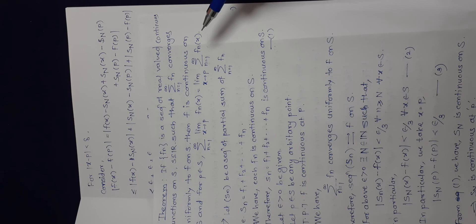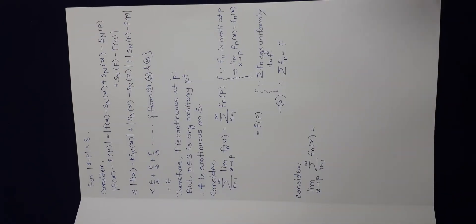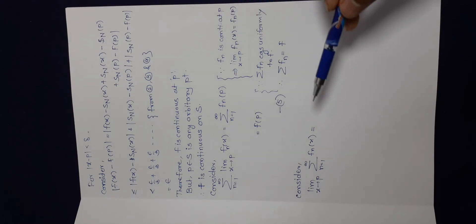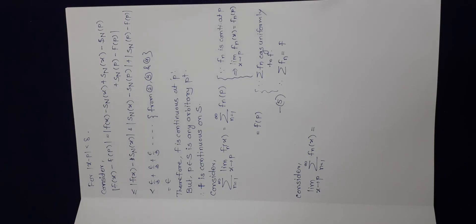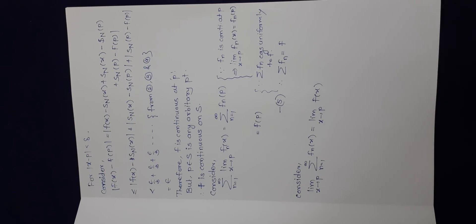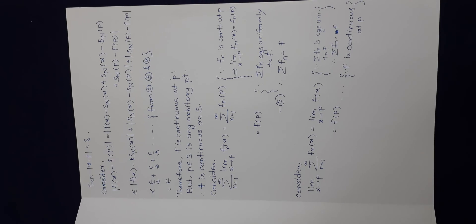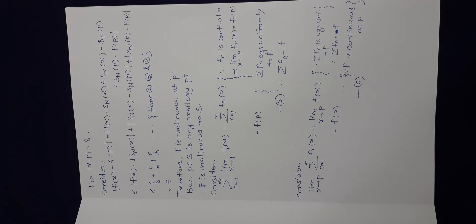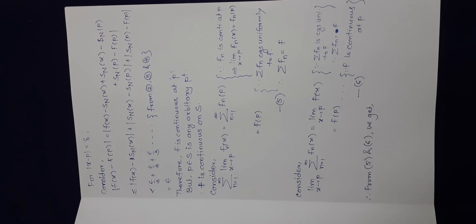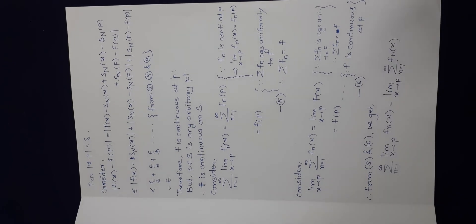Now consider the right-hand side. Since summation fn equals f, we can replace summation fn by simply f. So we get limit as x tends to p of f of x. As f is continuous at p, its value is f of p. We call this equation number 6. Equations 5 and 6 have the same right-hand side, so their left-hand sides must be equal. Therefore, from equations 5 and 6 we get the required equality. Thank you.